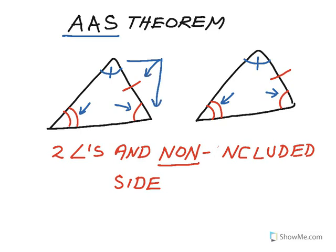If I look at these three, I have an angle, an included side, and an angle congruence to the same parts on the other triangle. Because we know that third angle will be congruent, the Angle-Angle-Side theorem is just sort of a hybrid — it's really just the Angle-Side-Angle theorem, just that we haven't drawn that third angle in as being congruent.